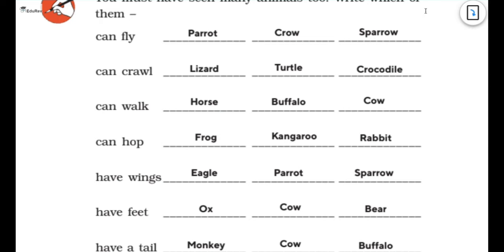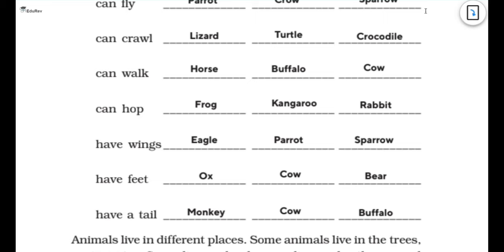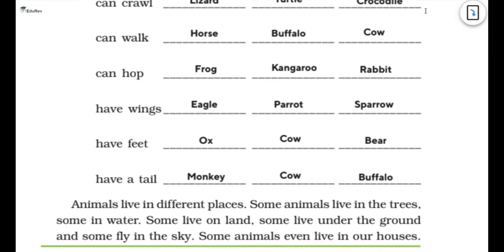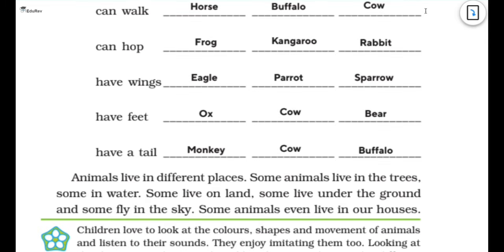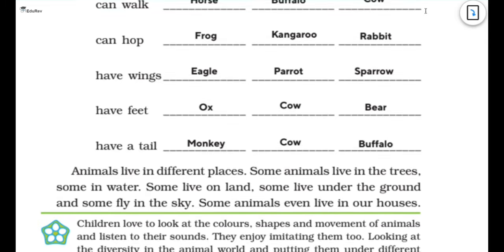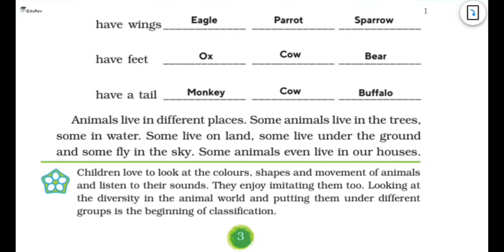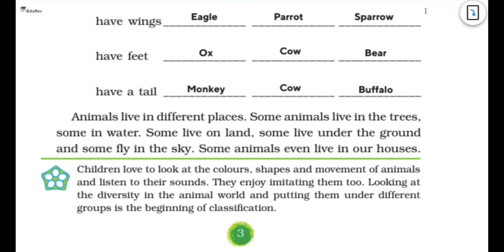The ones which can crawl are lizard, turtle and crocodile. The ones which can walk are horse, buffalo and cow. Can hop, frog, kangaroo and rabbit. Have wings, eagle, parrot and sparrow. Have feet ox, cow and deer. And have a tail, monkey, cow and buffalo.